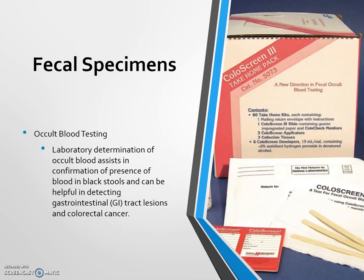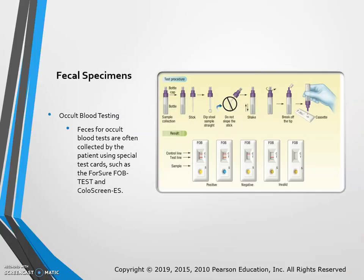Occult blood testing detects blood in the stool. Laboratory determination of occult blood can confirm the presence of blood in black stools and is helpful in detecting GI lesions, colorectal cancer, and Crohn's disease. Feces for occult testing are often collected by the patient using special test cards such as the ForSure FOB test and the Colon Screen — a small amount of stool is dipped into the sample bottle, shaken, and applied to a cassette to read results.